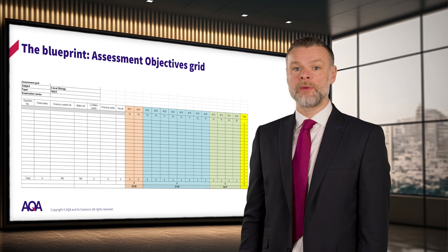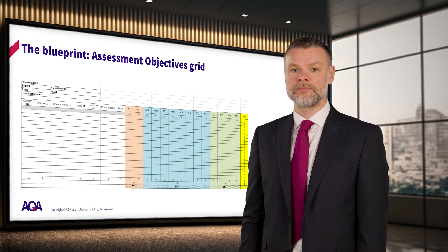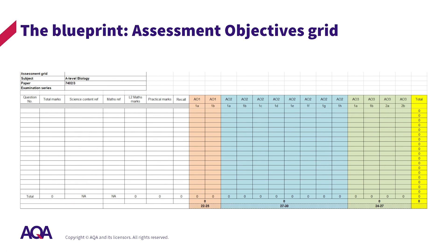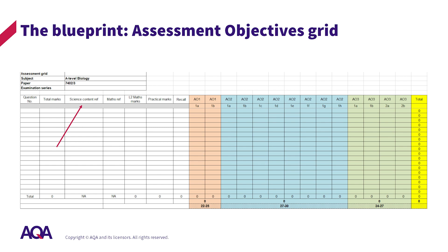The lead assessment writer has to follow a blueprint document that details the required structure of each paper, including what it can assess, the types of questions, and assessment objective balance required. Once the first draft of the paper and the mark scheme is completed, an assessment objective grid is put together. The template grid for paper 3 can be seen on screen now. Every section of this grid must be completed for each paper to ensure Ofqual requirements are fulfilled and that the assessment objective balance for each paper is correct and in line with that indicated in the specification. This grid is updated as revisions are made to the paper during the paper production process, and is used by AQA to ensure consistency from year to year and to monitor coverage of the specification.